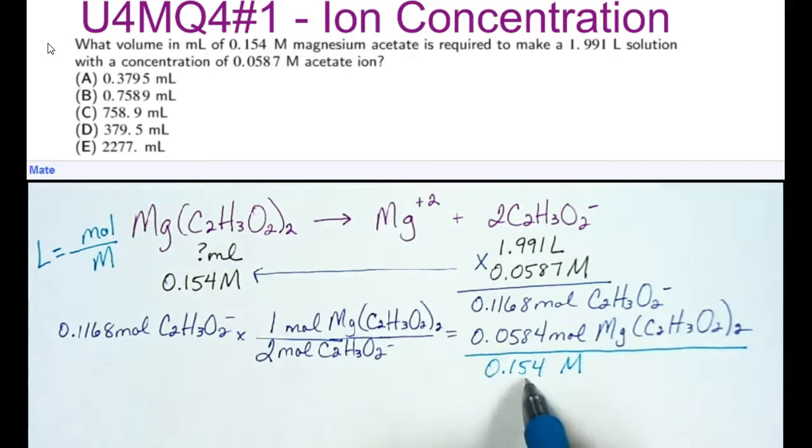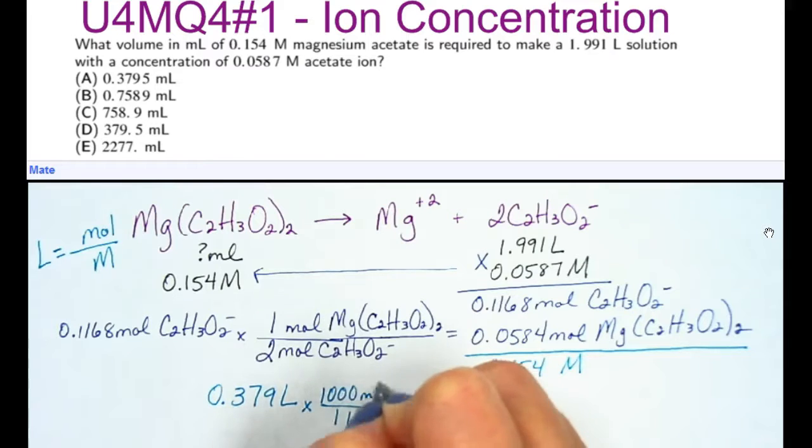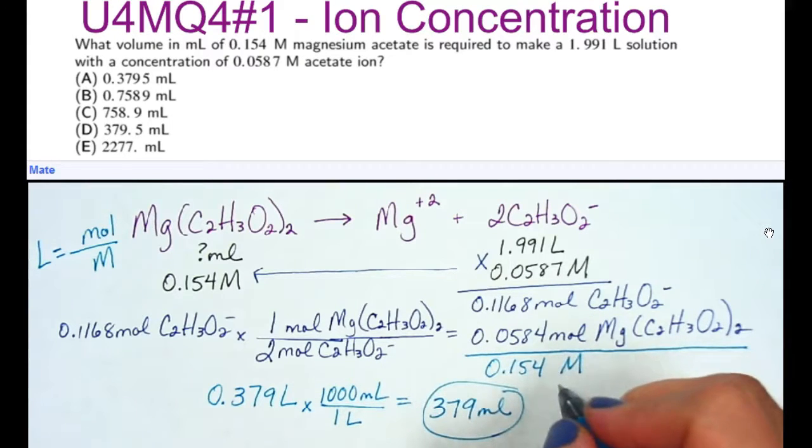And when I divide these two, we get 0.379 liters, but we want our answer to be in milliliters. And so one liter equals a thousand milliliters. When I multiply these, I get 379 milliliters, which corresponds with letter D.